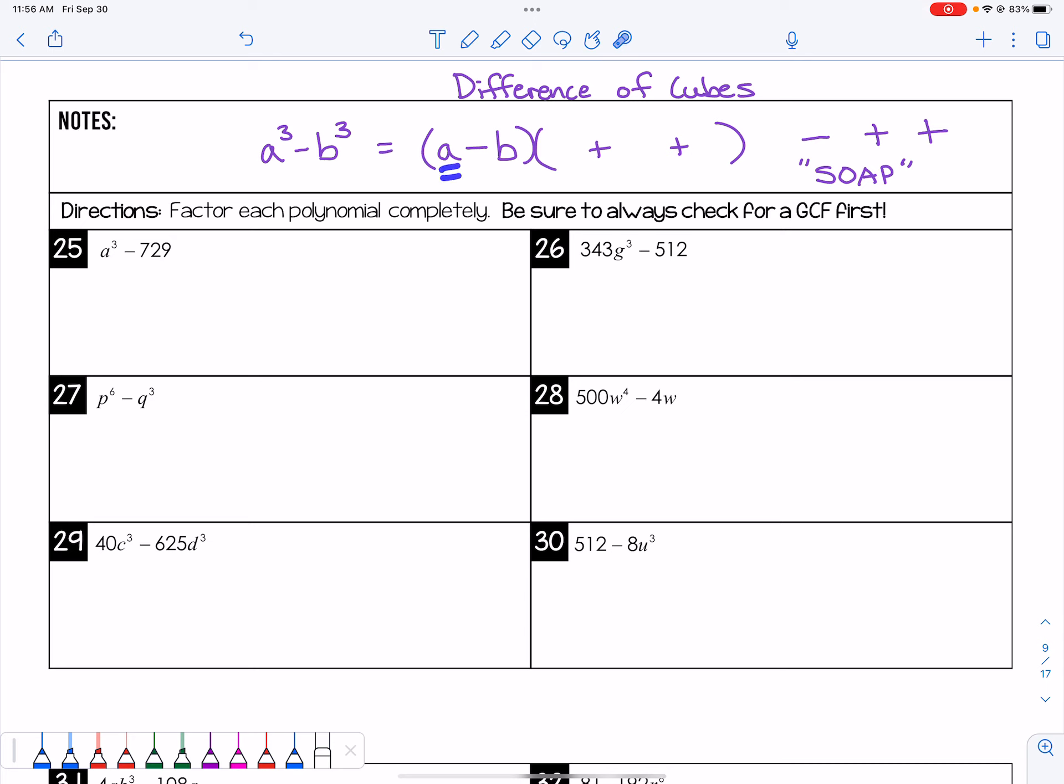Remember, we square the first term in the binomial to get the first term in the trinomial, so that'll be a². Then we need to square the last term to get the last term in the trinomial, so that'll be b². And then we multiply these together, ignore the sign, because you've already put the pattern of signs in place. So that is the pattern for difference of cubes, which is very similar to the sum of cubes. It just has different signs.